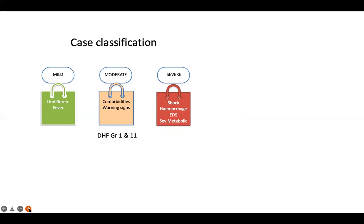Dengue with warning signs is also classified as moderate dengue, which includes dengue hemorrhagic fever grades 1 and 2. Severe dengue involves severe capillary leak leading to profound shock, severe hemorrhage, and multi-organ involvement — including dengue encephalitis, myocarditis, and hepatitis — also termed expanded dengue syndrome.